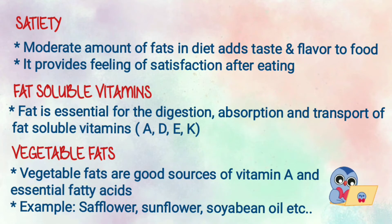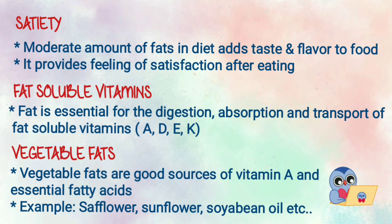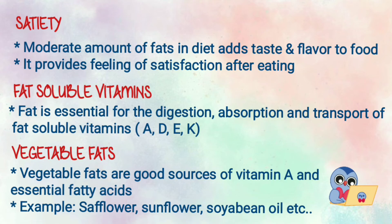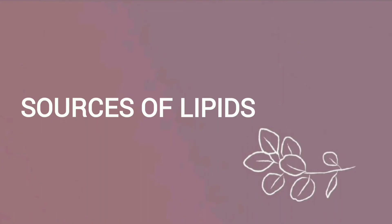Fourth, fat-soluble vitamins — fat is essential for digestion, absorption, and transport of fat-soluble vitamins such as vitamins A, D, E, and K. Fifth, vegetable fats — vegetable fats are good sources of vitamin A and essential fatty acids. Examples include safflower oil, sunflower oil, and soybean oil.